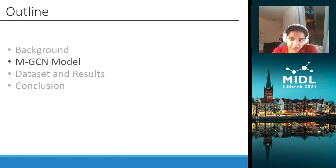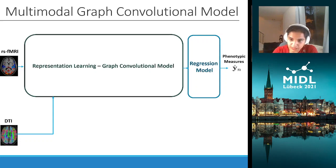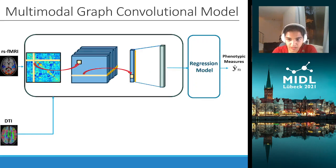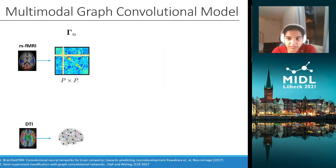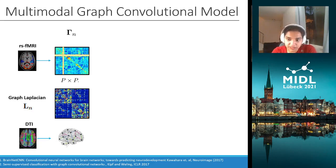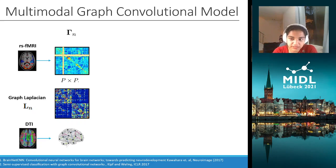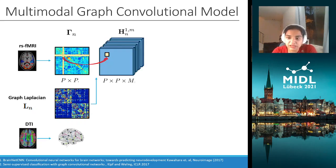We will now introduce the MGCN model which we propose. Our model consists of mainly two parts. The first is a representation learning module which uses a graph convolutional feature extractor, as shown in green. The second is a regression model that maps to phenotypic measures. From the resting state data, we have connectivity information represented as a correlation matrix of size p×p. Complementary to this, we have tractography-based structural connectivity matrices from DTI data, which informs us of anatomical connectivity within the same brain ROIs. Our model assumes that the latent graph structure for a patient is given by the DTI graph Laplacian L, with the correlation matrix γ_n being the associated graph signal. We learn a hidden representation calculated by a topological graph filtering operation at each node pair within the graph.